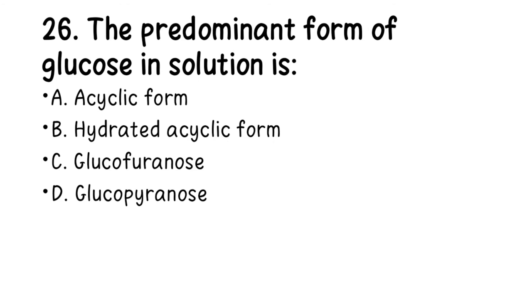Number 26. The predominant form of glucose in solution is: A. Acyclic form, B. Hydrated acyclic form, C. Alpha-D-glucopyranose, D. Beta-D-glucopyranose. The right answer is D, beta-D-glucopyranose.